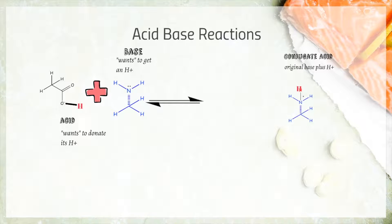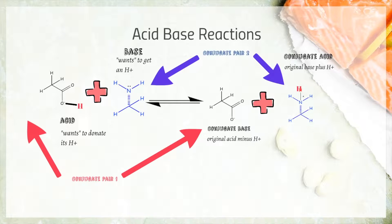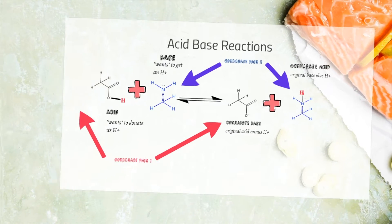It will have a proton that it is able to donate. The compound that was an acid will lose a proton and become its conjugate base. For this reason, we say we have two conjugate acid and base pairs that differ only in that one has a proton and one lacks it.